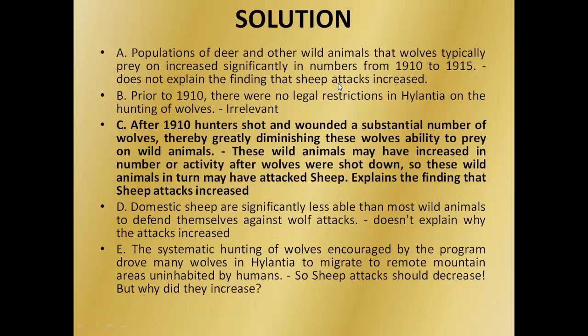Let's look at each option one by one. Option A says populations of deer and other wild animals that wolves typically prey on increased significantly in numbers from 1910 to 1915. This does not explain the finding that sheep attacks increased, so option A is ruled out. Option B says prior to 1910 there were no legal restrictions in Halentia on the hunting of wolves — again, this is irrelevant, so B is also ruled out.